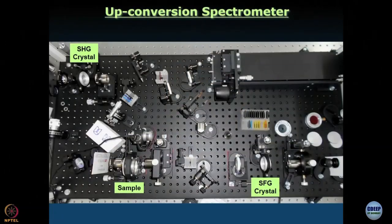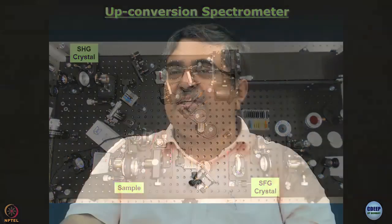First, let me show you a photograph of the upconversion spectrometer. This is what it looks like — a photograph taken from the top. This is not our instrument; it is the one at JNU, but our instrument is pretty much the same. Next day we are going to go to the lab and show you our instrument in real time and show you how the data is recorded. In this module we are going to tell you and help you understand the underlying principles without actually going to the lab.